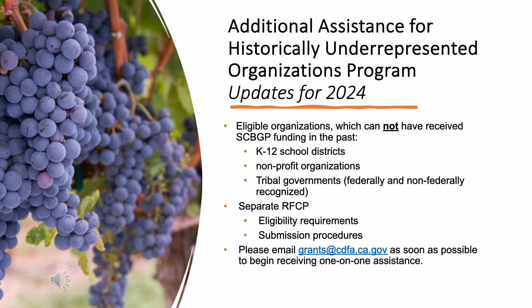We'd also like to briefly highlight some updates to the Additional Assistance Program. This program is part of the SCBGP and the intent is to facilitate the participation of organizations that have been historically underrepresented in the SCBGP. If you are a first-time applicant to the SCBGP, it is not mandatory you apply to the Additional Assistance Program. However, organizations who do apply to the Additional Assistance Program cannot apply to any other funding category. This year, the Additional Assistance Program has its own RFCP with separate submission deadlines and eligibility criteria. K-12 school districts are now eligible to apply to the Additional Assistance Program, in addition to non-profit organizations and tribal governments, both federally and non-federally recognized.